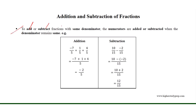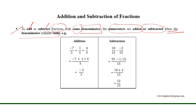To add or subtract fractions with the same denominator, the numerators are added or subtracted while the denominator remains the same. For example, if we want to add the fractions minus 7 over 5, 1 over 5, and 4 over 5 with the same denominator 5, the numerators minus 7, 1, and 4 are added, resulting in minus 2. Thus, the addition of the fractions results in minus 2 over 5.